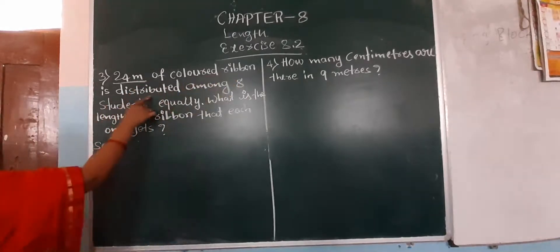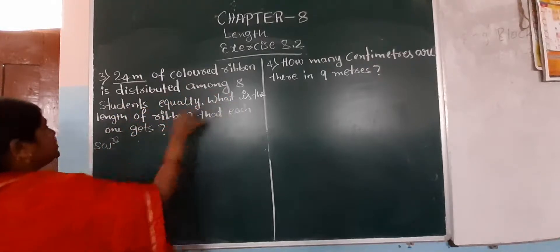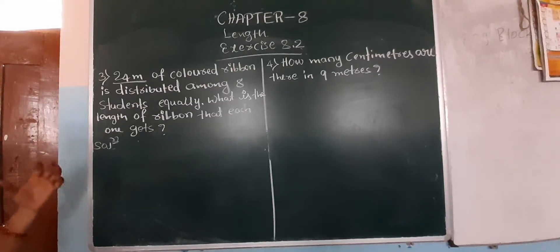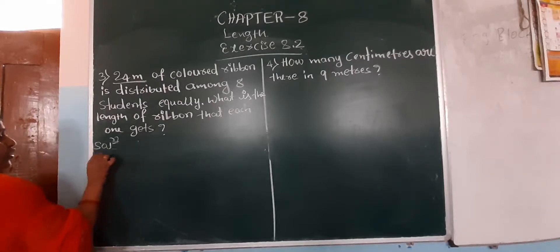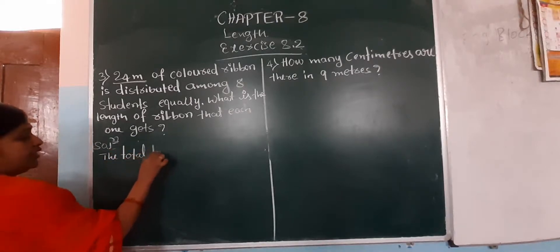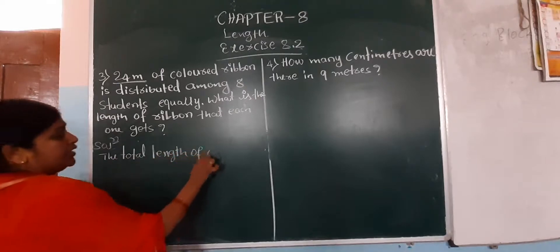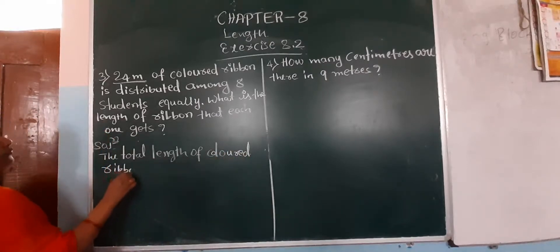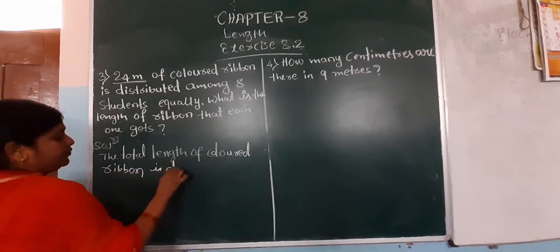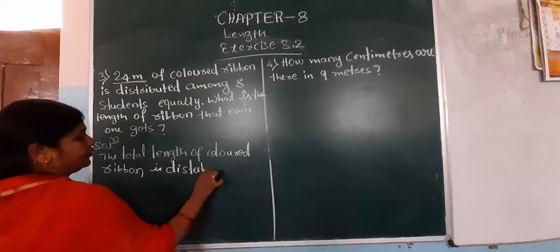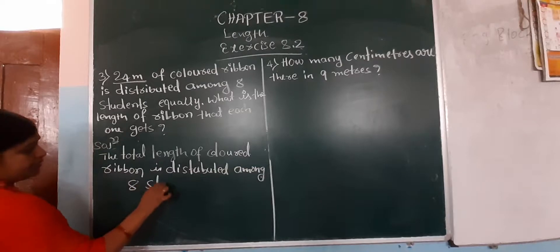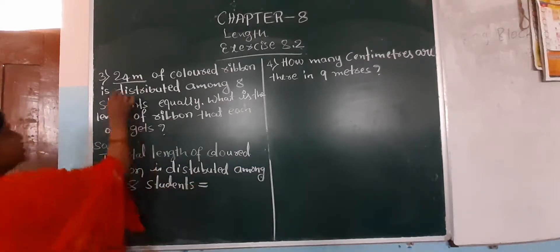Next question: what is the diameter — the total length of a color ribbon is 24 meter. It is distributed among 8 students. How much does each one get?